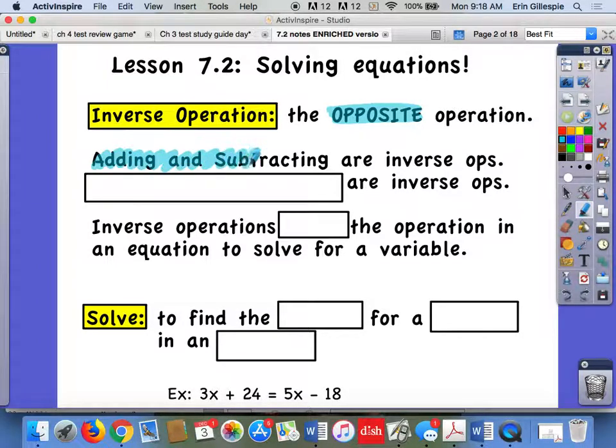Meaning like if I add 5 and then I take away 5, I'm right back where I started. So if I do 8 plus 5, that's 13, and then if I take away 5, I'm right back to 8. So they undo each other. They're inverse operations. They're opposite.